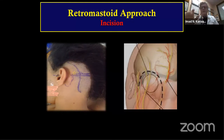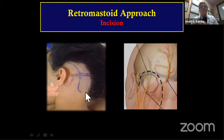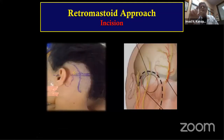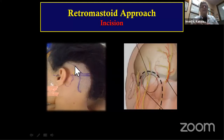Two or three burr holes are adequate to expose the retrosigmoid approach with a smaller flap. The mastoid tip highlights the base of the posterior fossa. I specifically use this type of incision — not the one from the web — for the retromastoid approach.